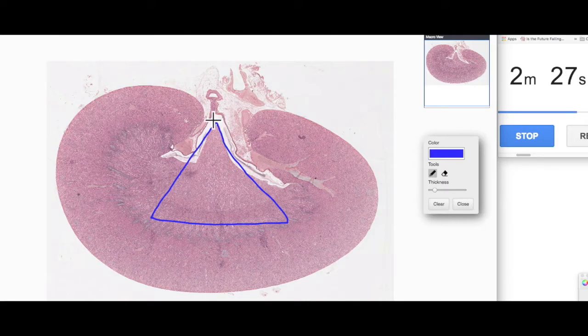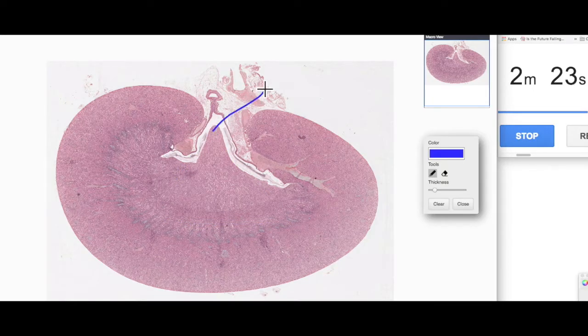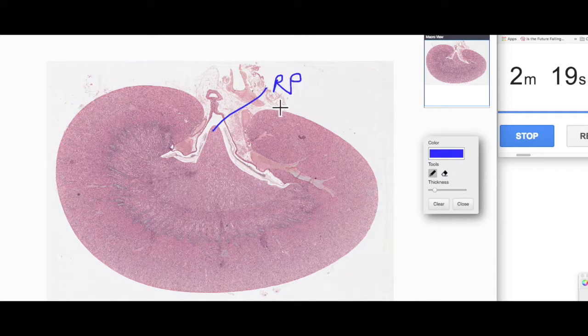The apex of the triangle here is a region referred to as the renal papilla. I'll just put RP here so you know it's the renal papilla. The renal papilla is where the urine drips out and is first collected.